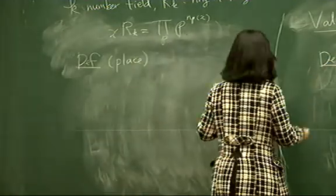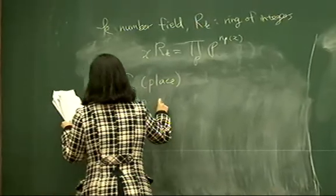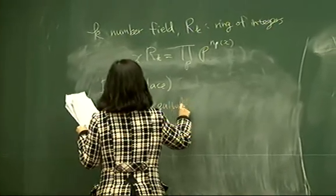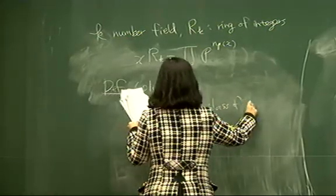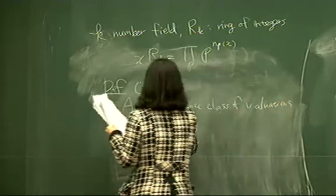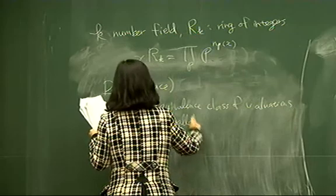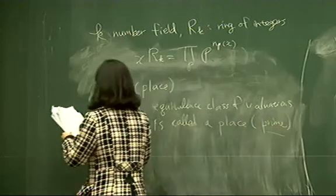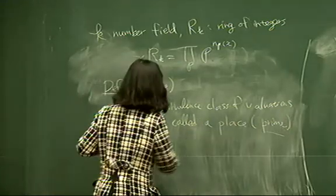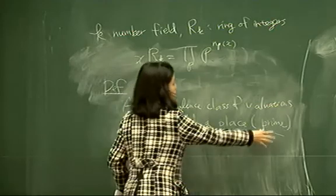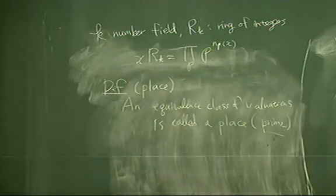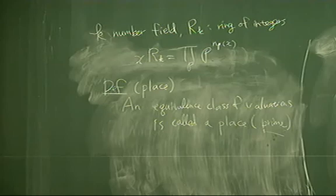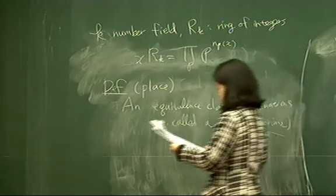We now consider valuations up to equivalence. An equivalence class of valuations is called a place or a prime. It is called a prime because we are mostly dealing with number fields where most valuations are obtained from a prime ideal.